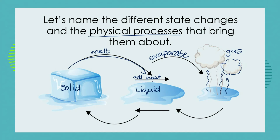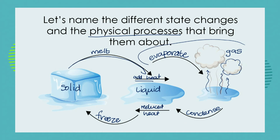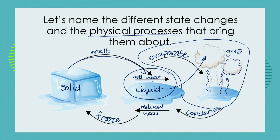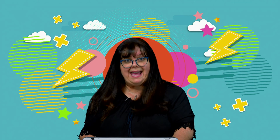Now, what if we went in the opposite direction and reduced or removed heat? The gas would condense into a liquid, and it could freeze into a solid. All of those terms are terms that you know about. We're focusing on boiling point, which is adding heat to a liquid in order to make it evaporate into the vapor or gas form.